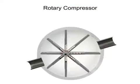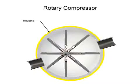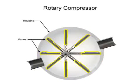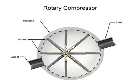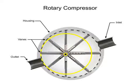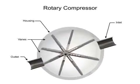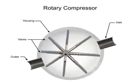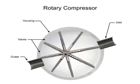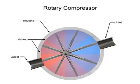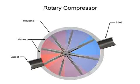Rotary compressors typically consist of a cylindrical housing with adjustable rotary vanes, an inlet, and an outlet. The vanes are on an off-center drive shaft. As the shaft rotates, the vanes slide in and out to maintain contact with the cylindrical compressor wall, creating chambers within the cylinder of varying sizes.